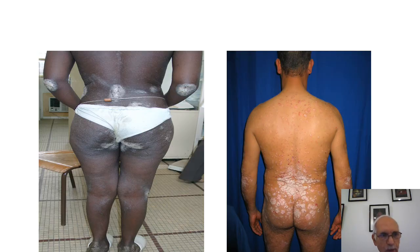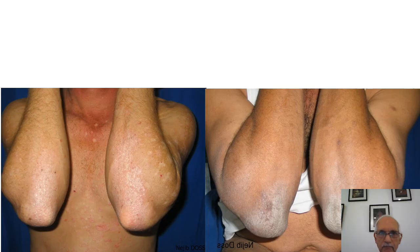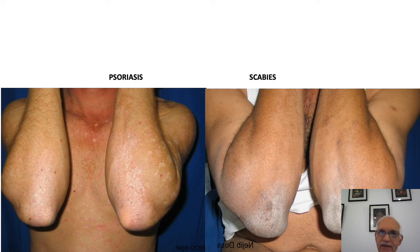Here we have two different patients with thick scales on the elbows and the sacral area — it was crusted scabies and psoriasis. Two other patients with scales on the elbows: it was psoriasis and scabies.